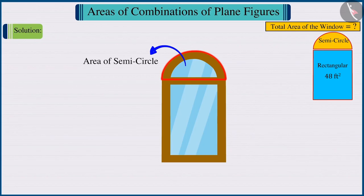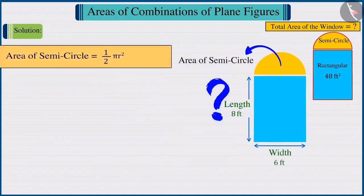Can you tell what will be the area of the semi-circle? Absolutely correct! Its area is equal to 1 by 2 pi r square.